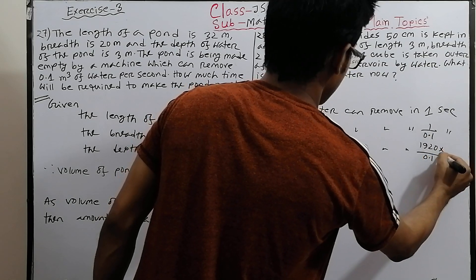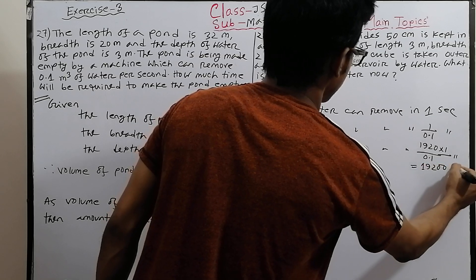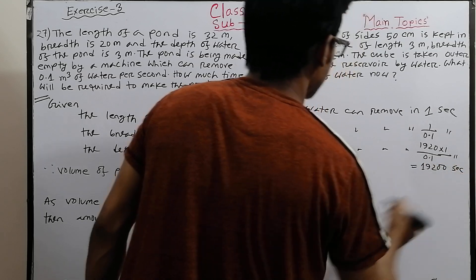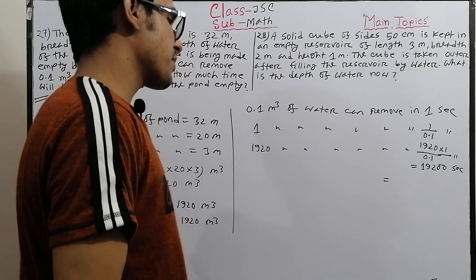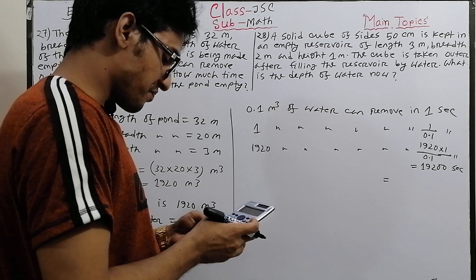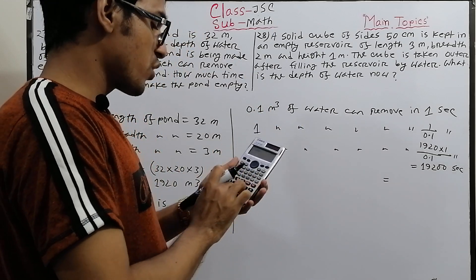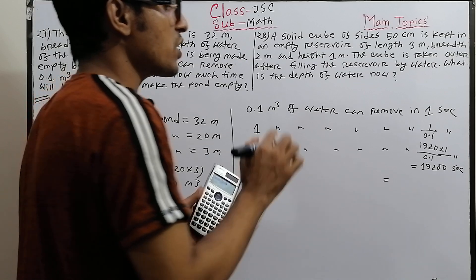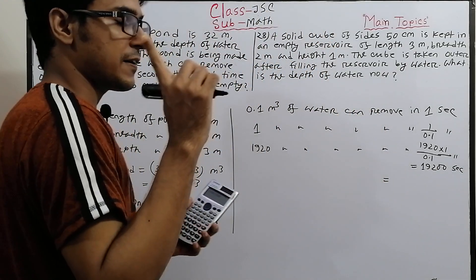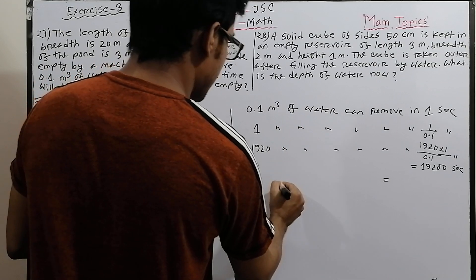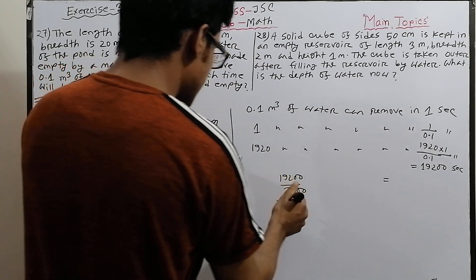Calculating: 1920 divided by 0.1 equals 19200 seconds. Now we need to convert 19200 seconds to hours and minutes. One hour equals 3600 seconds, so we divide 19200 by 3600.